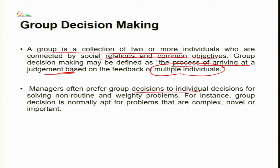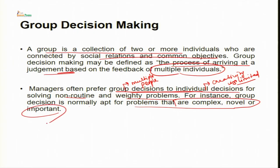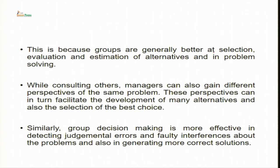Group decision making may be defined as the process of arriving at judgment based on feedback of multiple individuals. Managers often prefer group decisions to individual decisions because individual creativity is limited to one person's knowledge, while group decision making involves multiple people and high amounts of brainstorming. Group decision making is generally done for non-routine and weighty problems — it is most apt for problems that are complex, novel or important. Groups are generally better at evaluating and estimating alternatives, and when managers consult others they gain different perspectives on the same problem, facilitating development of many alternatives.